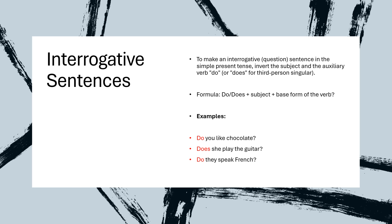How to make interrogative sentences for simple present tense: To make an interrogative sentence, invert the subject and auxiliary verb 'do' or 'does' for the third person singular. Formula: do/does + subject + base form of the verb + question mark. For example: do you like chocolate? Does she play the guitar? Do they speak French?